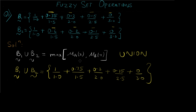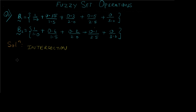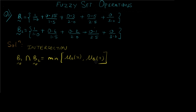Union is pretty simple — we just compare the two upper values or numerators and take the maximum, keeping the denominator unchanged. Just keep in mind that we need the denominators to be the same in order to make the comparison between numerators. For intersection, the formula is: B1 ∩ B2 is given by the minimum of μ_A(x) and μ_B(x). So in union we took the maximum, and in intersection we just take the minimum.